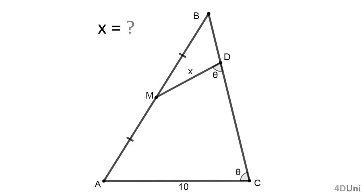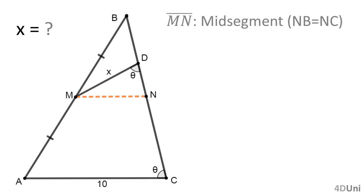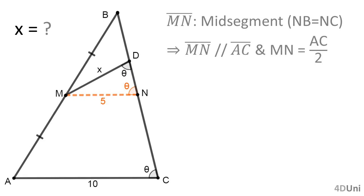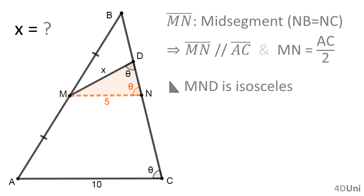Going back to our problem, we see that the midpoint M of side AB is part of the graphical information given, because there is another segment, segment MD, containing that point. We also see that the length of side AC is given. Remembering the recommendation, we draw the mid-segment MN. That mid-segment MN is parallel to side AC — meaning the measures of angles MND and ACB are equal — and MN equals one half of AC, so it is 5. Because triangle MND has two internal angles with the same measure, we can say that the triangle is isosceles. Then X is 5, which is the answer to our problem.